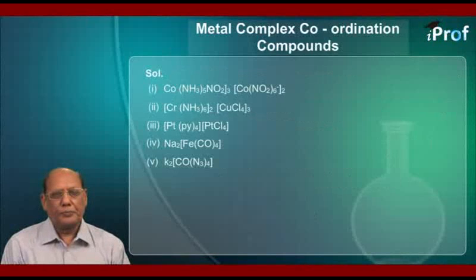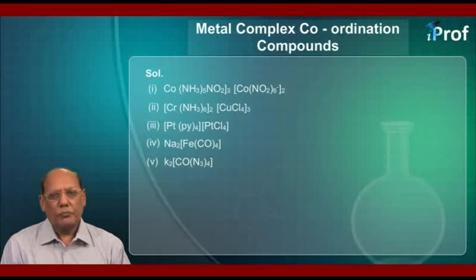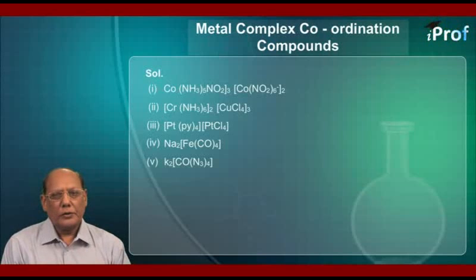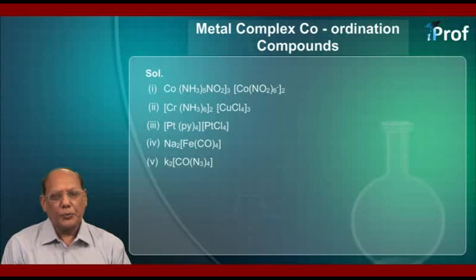Solution of question number two. The formula of the first compound is: [Co(NH3)5(NO2)](NO2)3, then [Co(NO2)6] whole two. The second is: [Cr(NH3)6] whole two, then [CuCl4] whole three. The third is: [Pt(py)4], then [PtCl4]. The fourth is: Na2[Fe(CO)4]. The fifth is: K2[Co(N3)4].